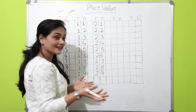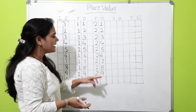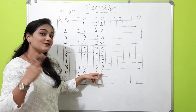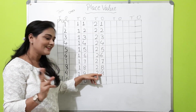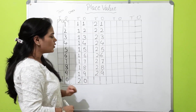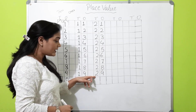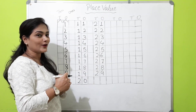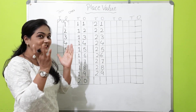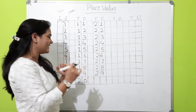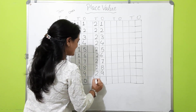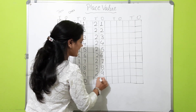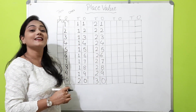And then, again, the same thing. After nine, we are going to get one more ten. And now, because we already have two tens, we are going to get three tens. So three tens — thirty.